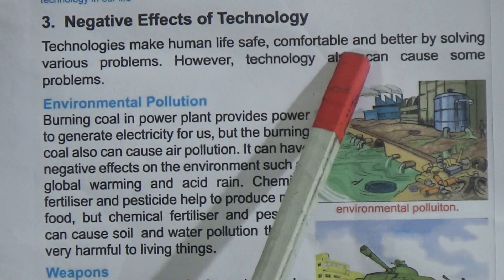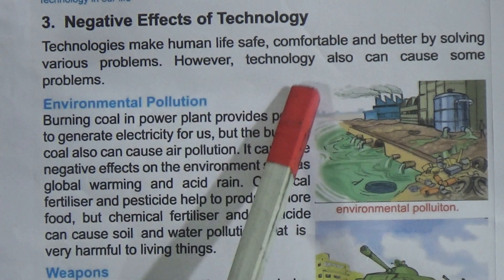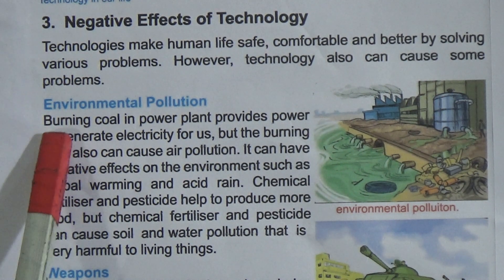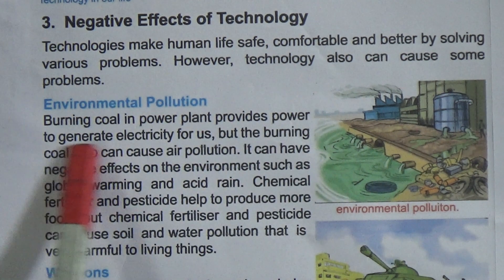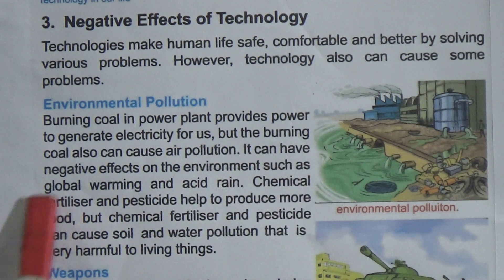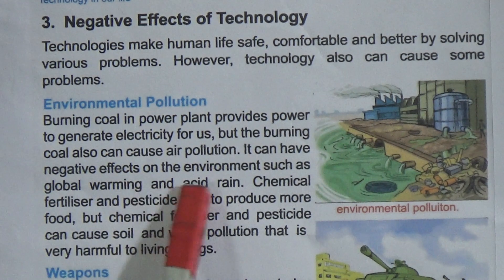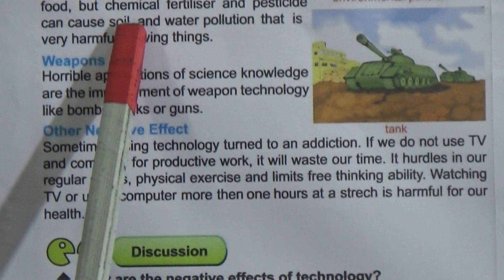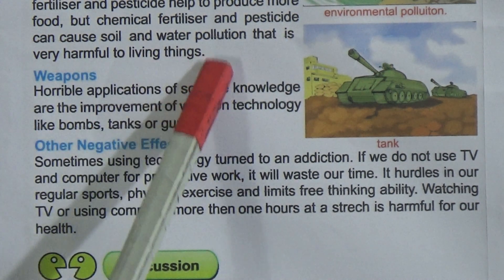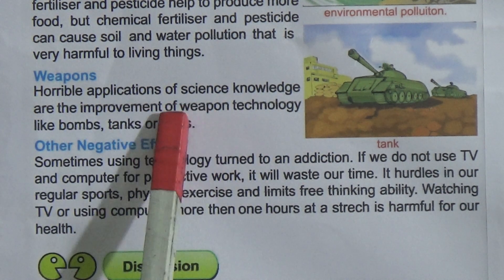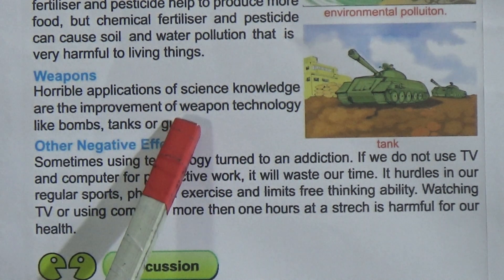Now come to the negative effects of technology. Technology makes human life safe, comfortable, and better by solving various problems. However, technology can also cause some problems. Burning coal in a power plant generates electricity for us, but it can also cause air pollution with negative effects on the environment such as global warming and acid rain. Chemical fertilizers and pesticides help produce more food, but they can cause soil and water pollution that is harmful to living things. A horrible application of science knowledge is the improvement of weapon technology like bombs, tanks, and guns.